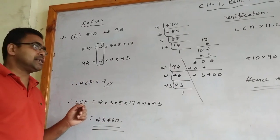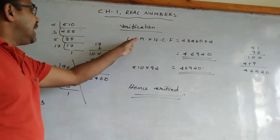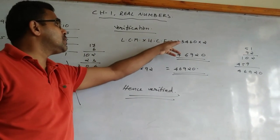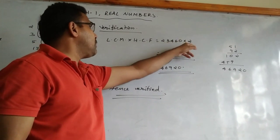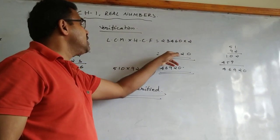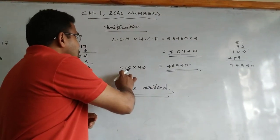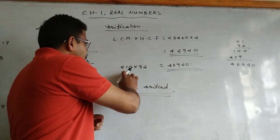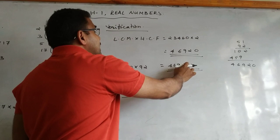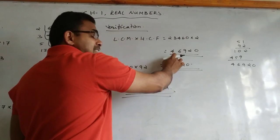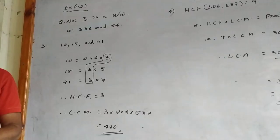HCF and LCM are now calculated. Verifying: LCM × HCF = 23,460 × 2 = 46,920. And the product of the two numbers 510 × 92 = 46,920. Therefore, product of LCM and HCF equals product of the two numbers — hence verified.